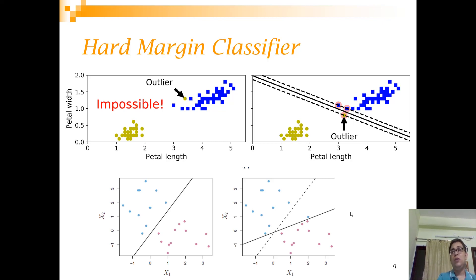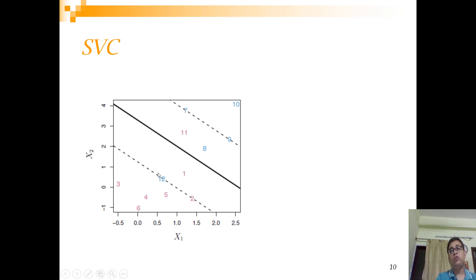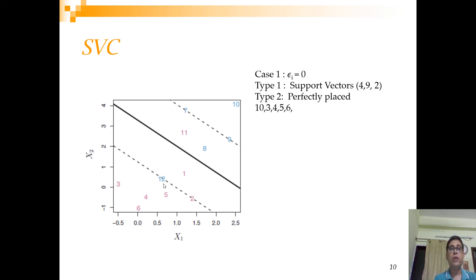You want to show some slackness so that points can be outside the margin and perhaps even on the wrong side of the decision boundary. The original hard margin classifier does not allow certain points to be on the other side, but using the support vector classifier concept this can be allowed. For each observation we find a slack variable, denoted εᵢ (epsilon i).